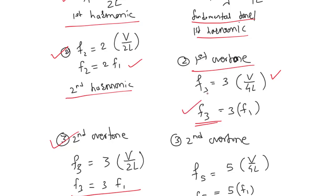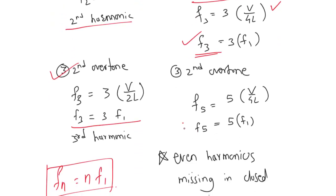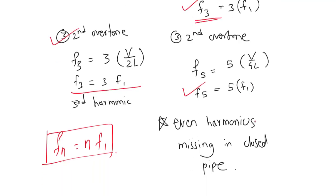We directly get the third harmonic, and after that, the fifth harmonic, which is 5f1. You can see that even harmonics are missing in closed-ended pipe.